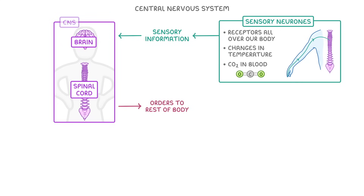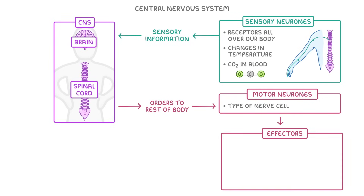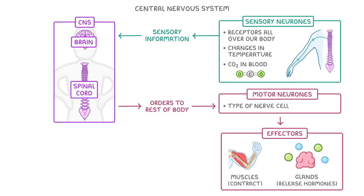Once our CNS, which just means central nervous system, has decided what to do with all this information, it sends impulses back out to the body via motor neurons, which are another type of nerve cell, to effectors, which are generally muscles or glands, that could be told to contract or to release hormones.